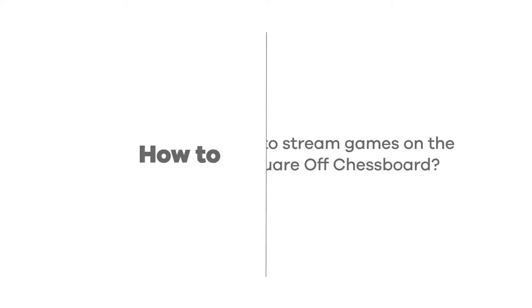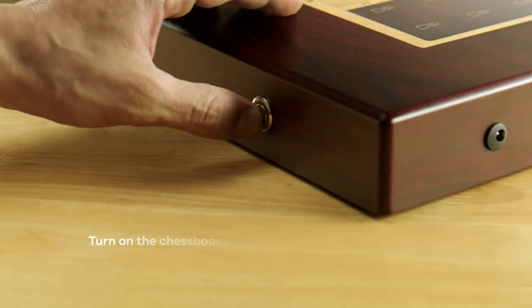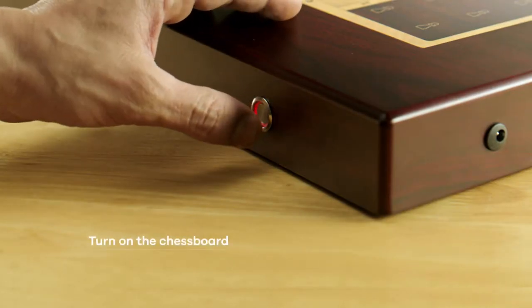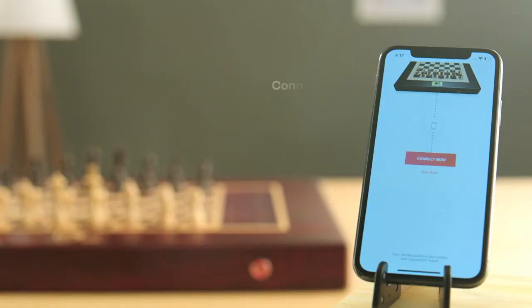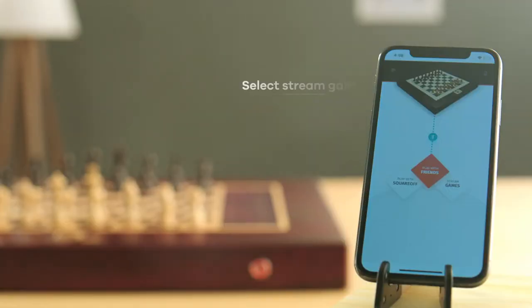To stream a live game on your chessboard, switch on the board, connect the SquareOff app to the chessboard, and press the stream games button.